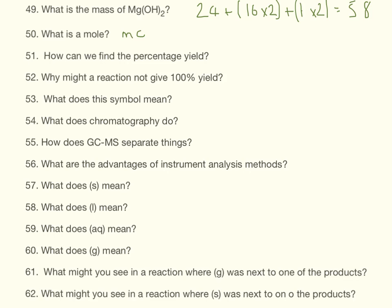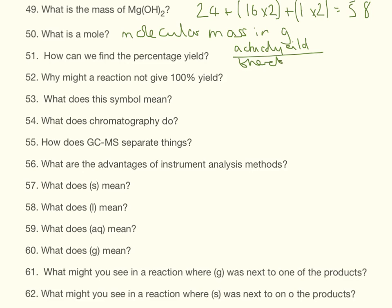The mole is the molecular mass in grams, so you should take the mass and put a G after it. How do we find the percentage yield? That is the actual yield divided by the theoretical yield times 100. Why might it not give 100%? Because it is a reversible reaction.